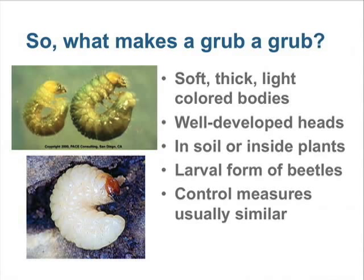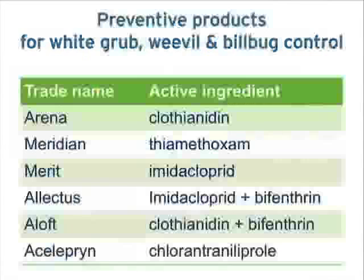So, to recap, the features shared by insects that are called grubs are their soft, thick, light-colored bodies, their well-developed heads, their presence in the soil or inside plants, and the fact that they are the immature stage of beetles.